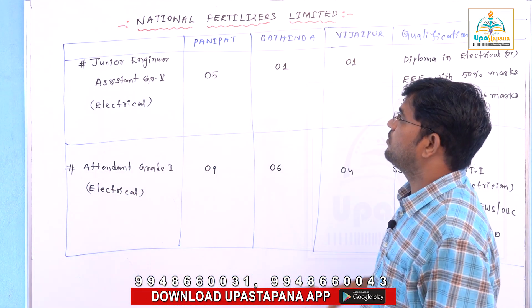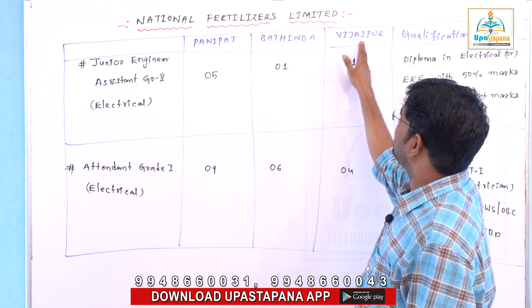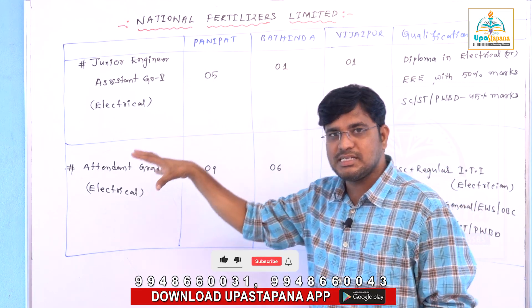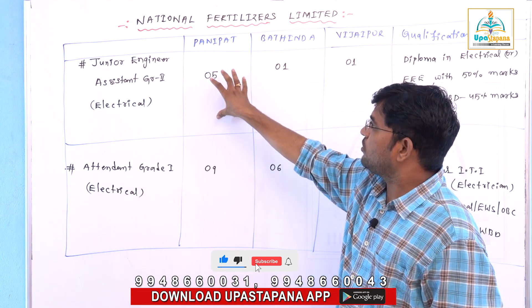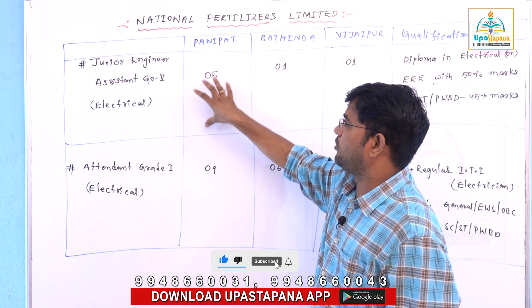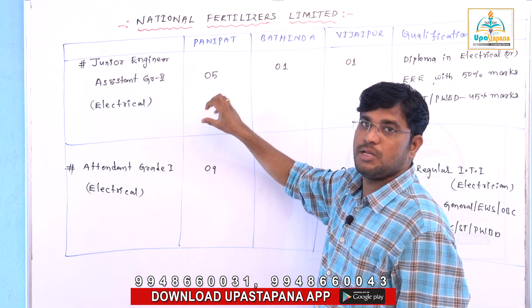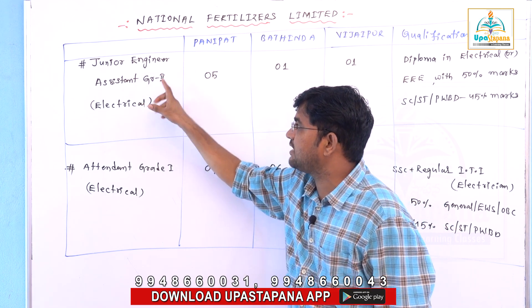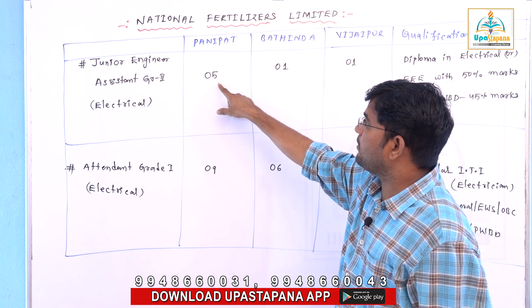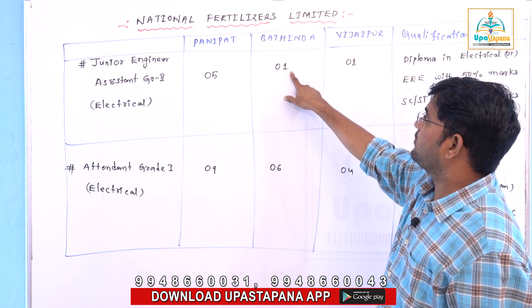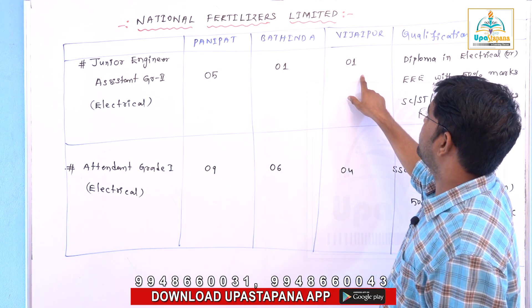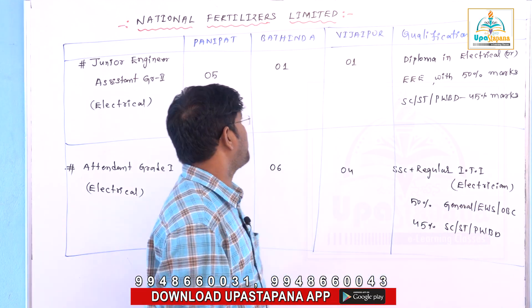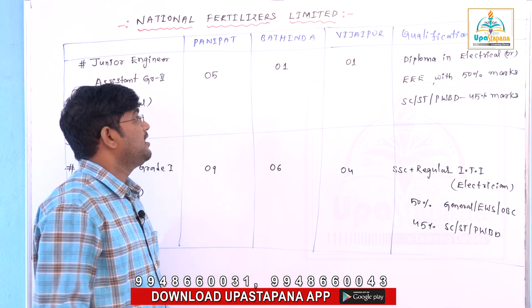We have 3 units: Panipat, Bathinda, and Vijaypur. We have a few vacancies in these units. In electrical engineering, meaning diploma Electrical Engineering, Junior Engineer Assistant Grade 2 in electrical — there are 5 vacancies in electrical, and Bathinda has 1 vacancy in Vijaypur. In total, there are 7 junior engineer vacancies.